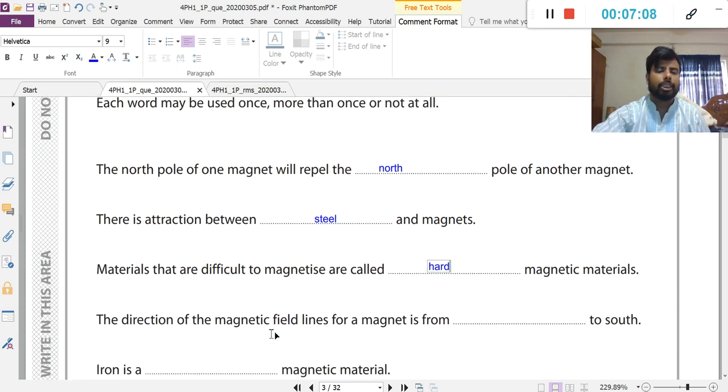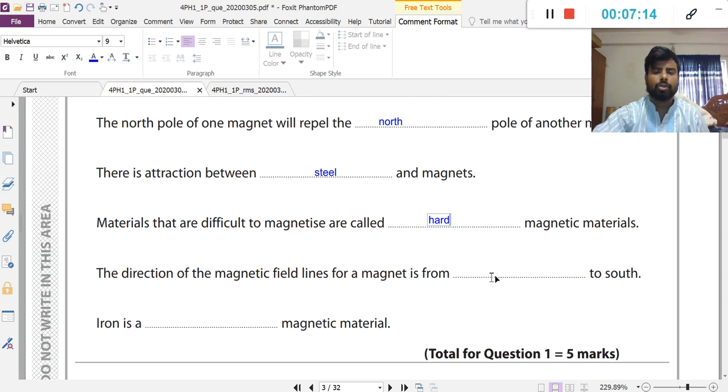The direction of the magnetic field lines for a magnet is from north to south. North to south. So there is another property of magnet: magnetic line of force. Magnetic line of force starts from north pole and ends at south pole. So north pole.